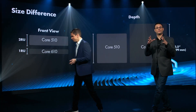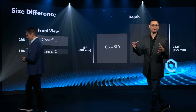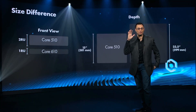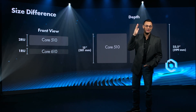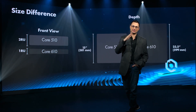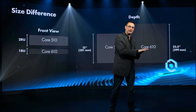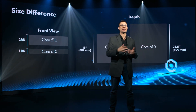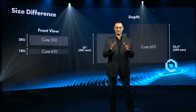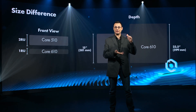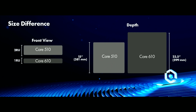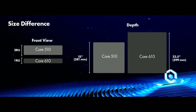It's also worth noting that there is a physical size difference between the two. If you're going into a new install and you are able to spec the rack, then this isn't really an issue. But if you're retrofitting a system that's already got a 510 in there and you're thinking about replacing it with a 610, just be aware that there is a size difference. The 510 is a 2RU unit and the 610 is a 1RU unit — so it is smaller, but it is deeper, at about 24 inches deep, whereas the 510 was only about 15 inches deep.